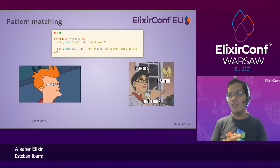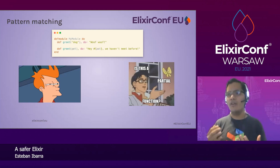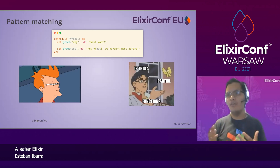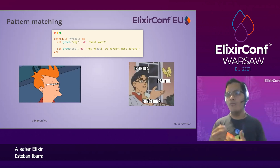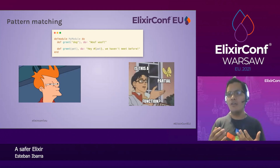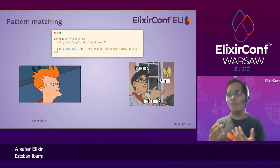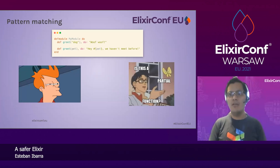This leads me to the concept of a partial function — a function that doesn't consider every case or scenario it will encounter. Right now we're assuming `pet` can be anything: an integer, string, map, keyword list, and so on. We're not introducing specific behavior for all the cases we'd like to handle. While that's often fine thanks to protocols and polymorphism, it's not always the safest approach — most of the time we want to cover the ideal scenario.